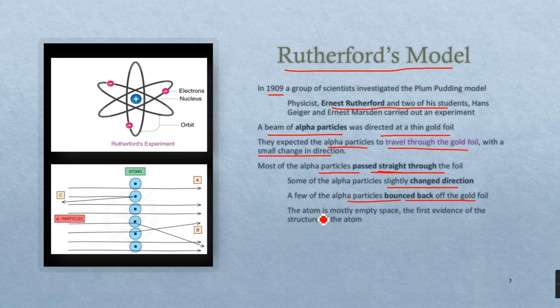This was the first evidence of the atomic structure where we know that the atom has a center or a nucleus and that most of it is empty space.